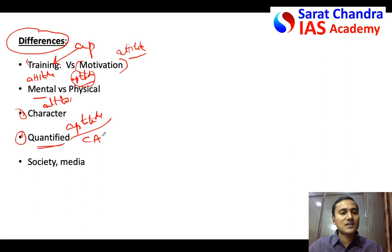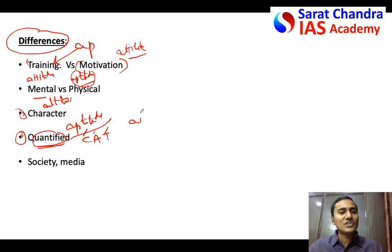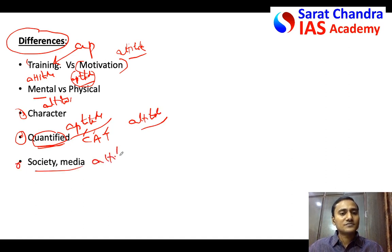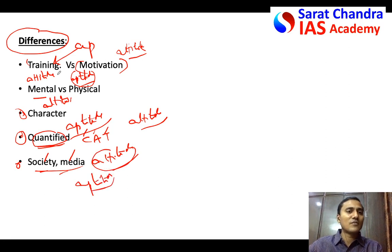Another difference: aptitude can be quantified. For example, the CAT exam — Common Aptitude Test — is an exam conducted for selecting management graduates into top management colleges of India, where they quantify your aptitude through reasoning and English comprehension, testing whether students have good reasoning ability and speed-reading ability required for a manager. Aptitude can be quantified, whereas attitude cannot be measured with numbers. Also, our attitude is greatly influenced by society and media, whereas aptitude mostly cannot be decided by society or media.